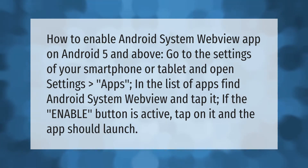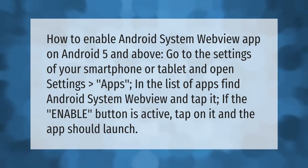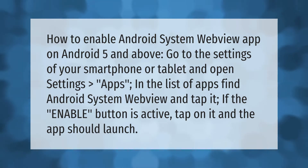How to enable Android System WebView app on Android 5 and above: go to the settings of your smartphone or tablet and open Settings → Apps. In the list of apps, find Android System WebView and tap it. If the Enable button is active, tap on it and the app should launch.